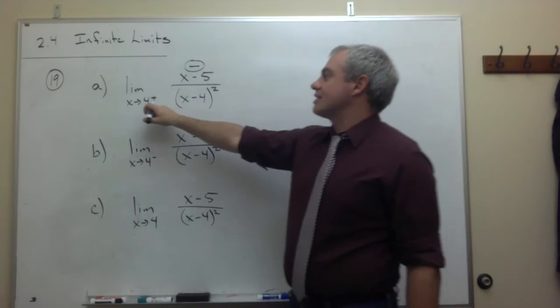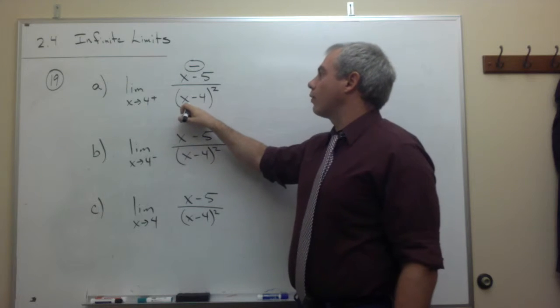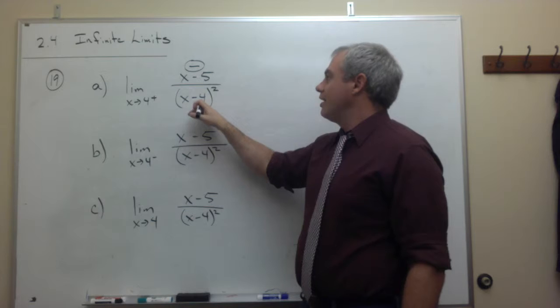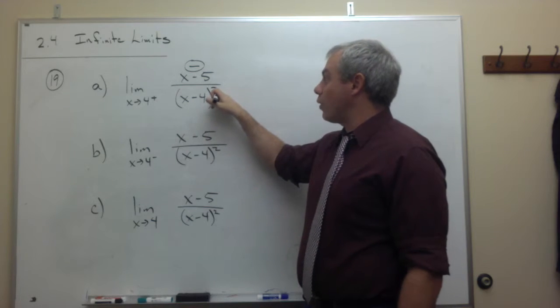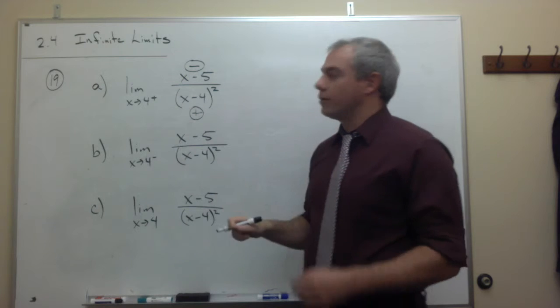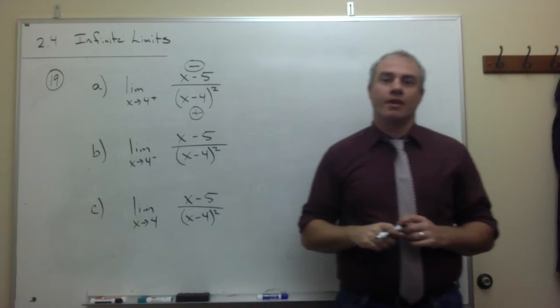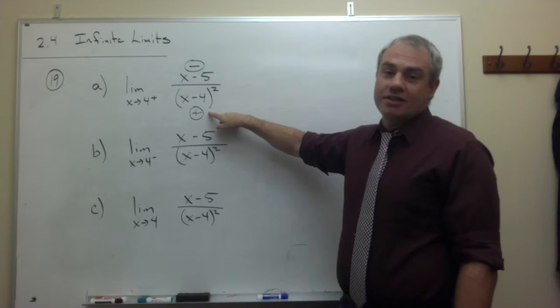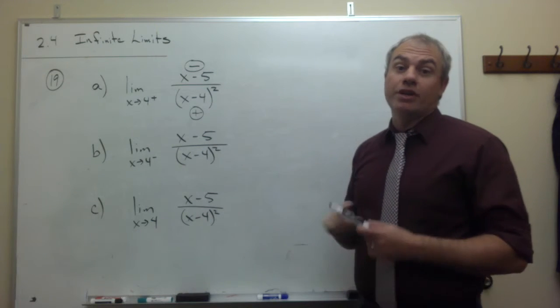On the bottom, if I take something slightly bigger than 4, well, something slightly bigger than 4 minus 4 is positive. And something positive squared is positive. So the bottom is going to be a positive value. So I have a negative value on top divided by a positive value on the bottom, which we know is negative.